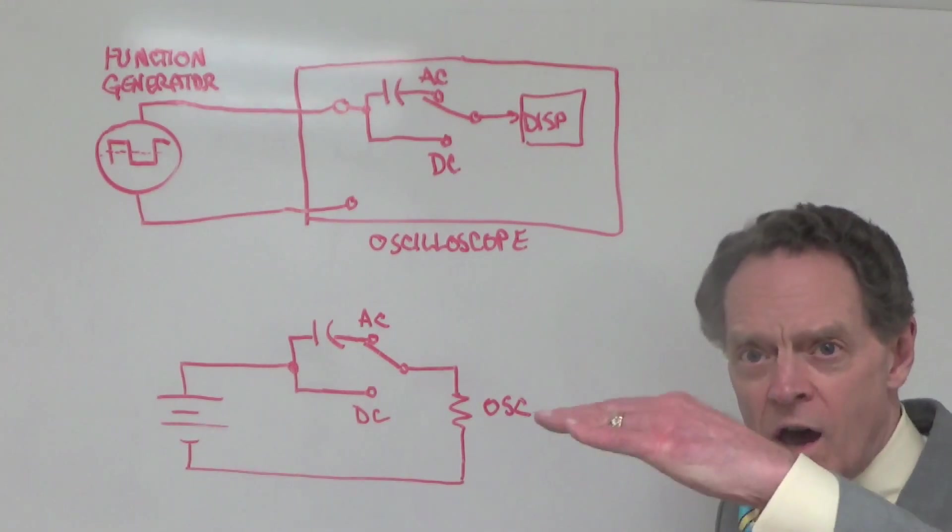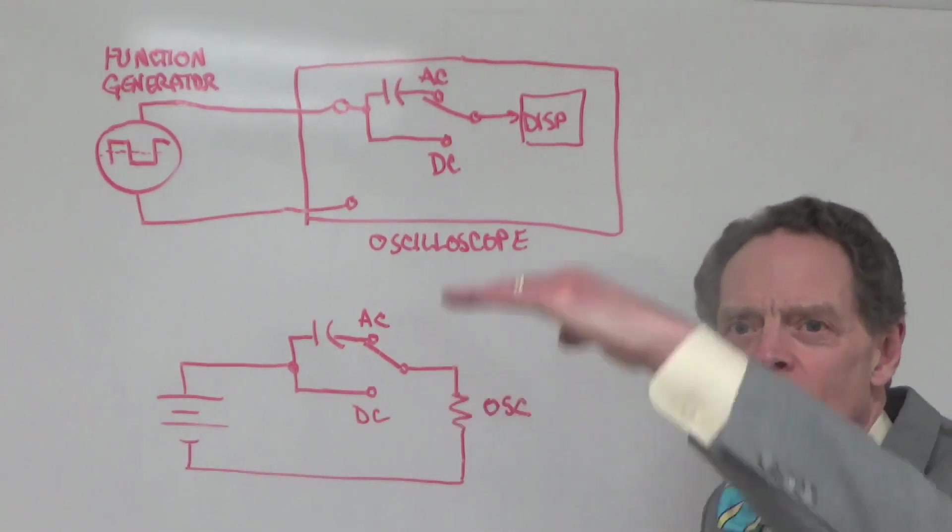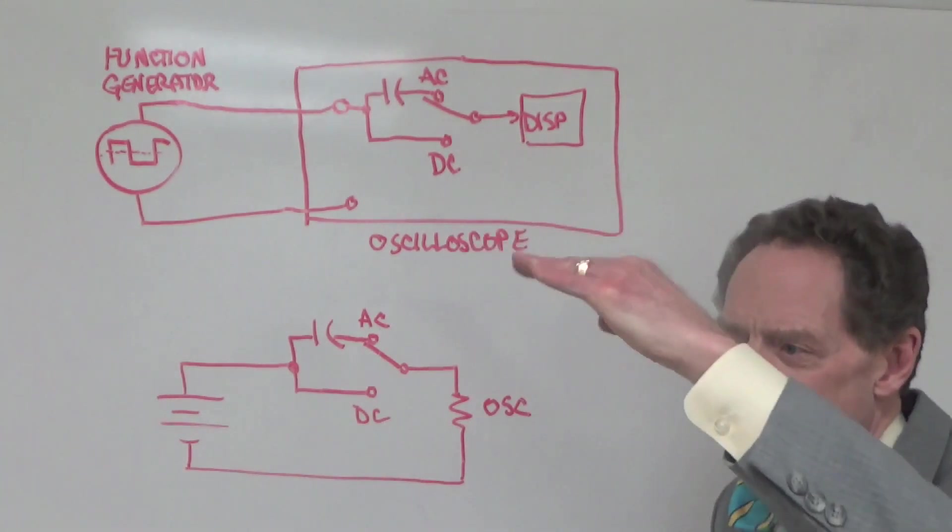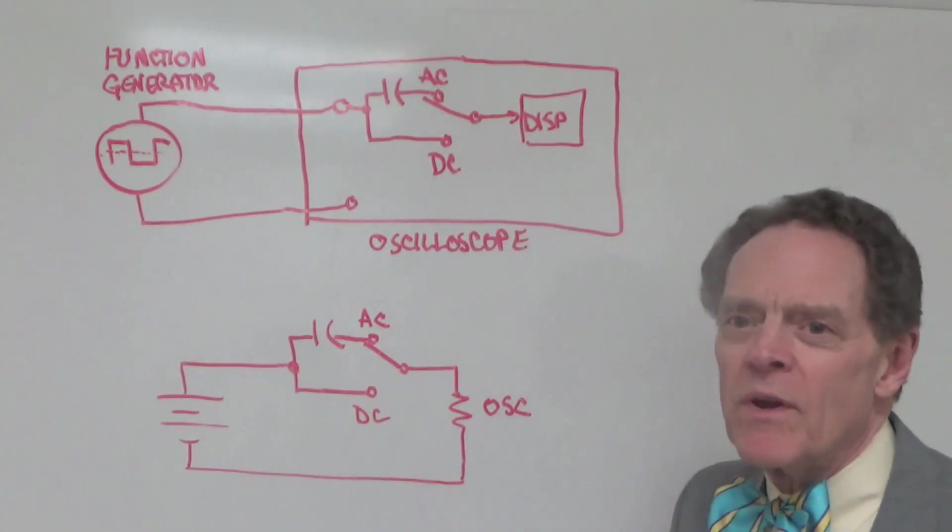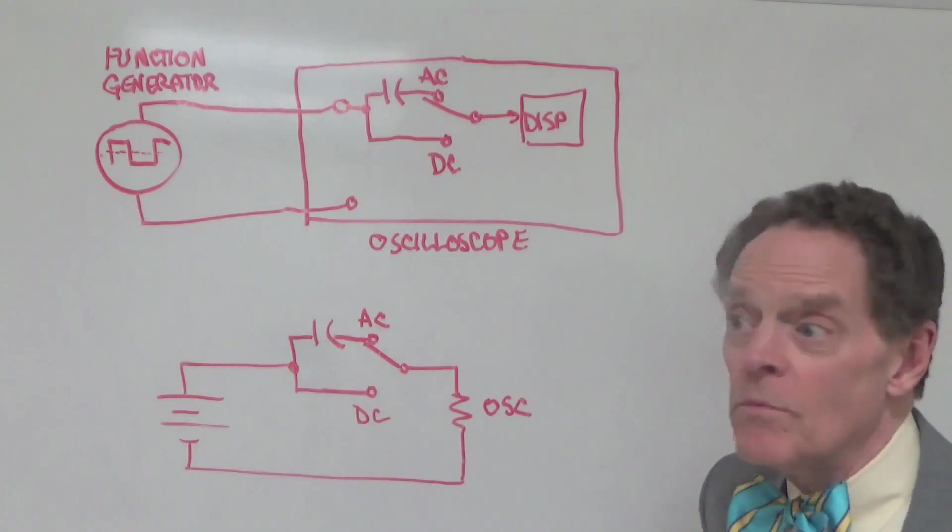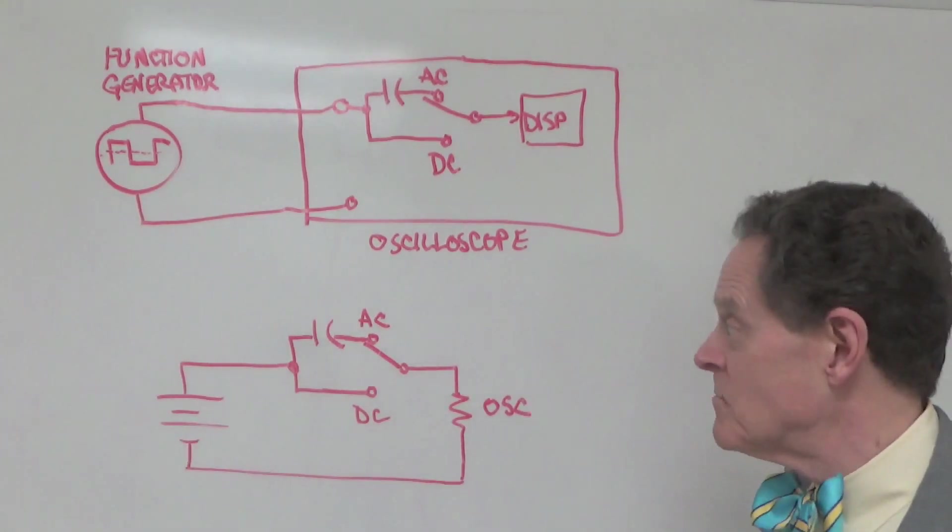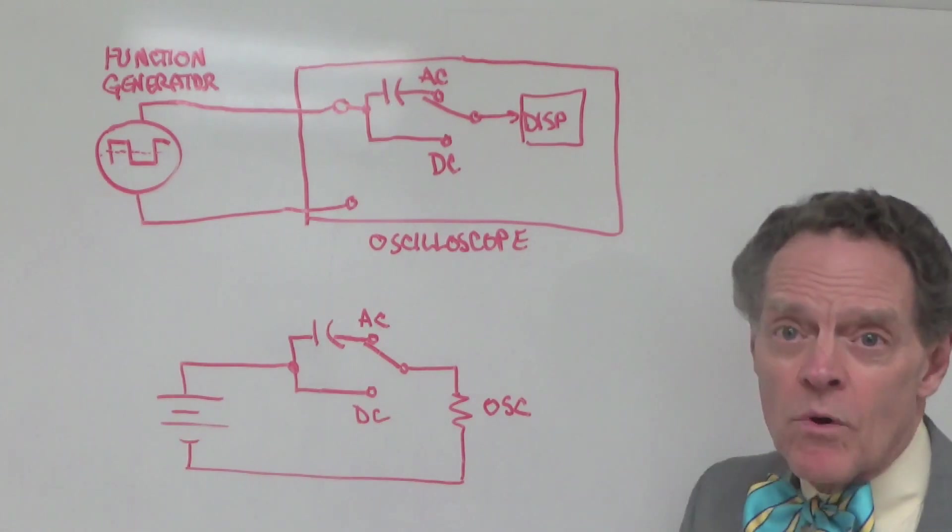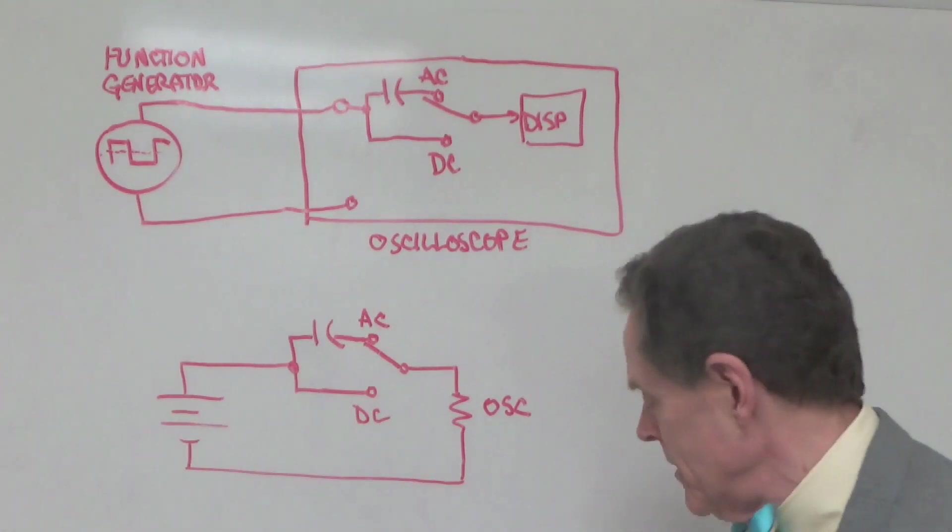If you were to move the switch down to the DC position, then what would happen is that the capacitor is bypassed and the 2 volts would appear directly across the oscilloscope. And that's what you saw is that the flat line that was there moved up one division in the grid. And we had 2 volts per division set as the gain on the oscilloscope. So, that was exactly what we would have expected.